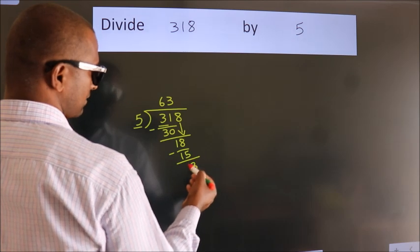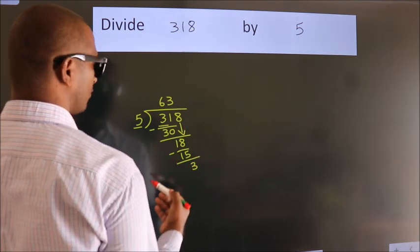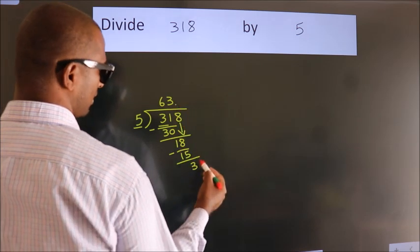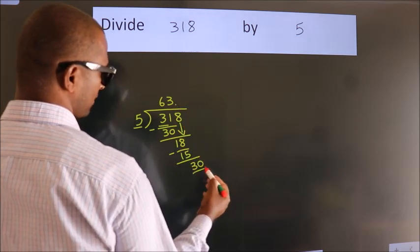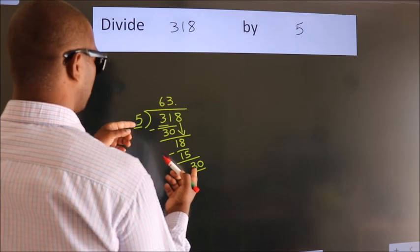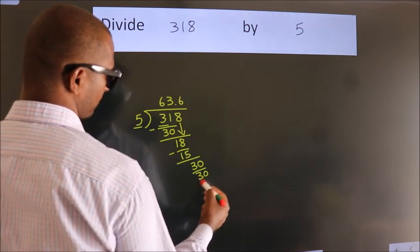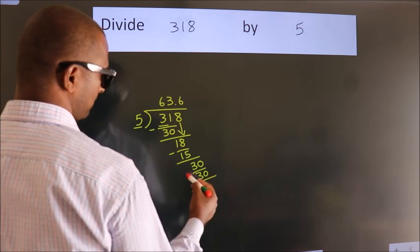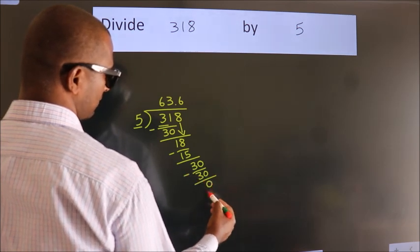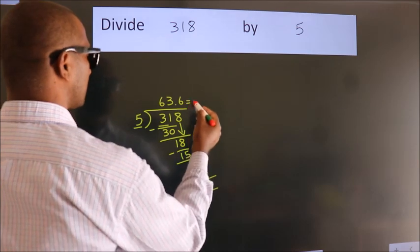After this, no more numbers to bring down. So what we do is, we put a dot and take 0. So 30. When do we get 30? In the 5 table, 5 times 6 is 30. Now, we subtract. We get 0. We got remainder 0. So this is our quotient.